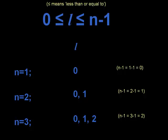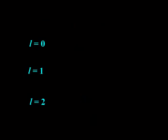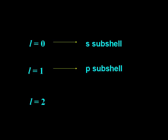These values for L tell us the shape or type of subshells in a particular shell. A value of L equals 0 corresponds to an S orbital. A value of L equals 1 corresponds to a P orbital. And when L equals 2, we have a D subshell.